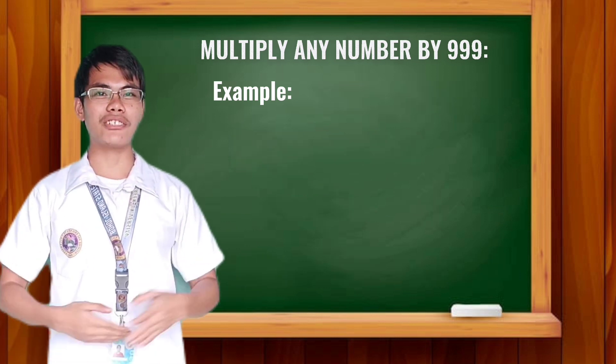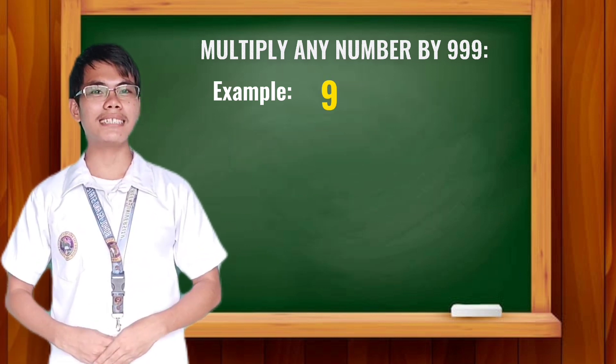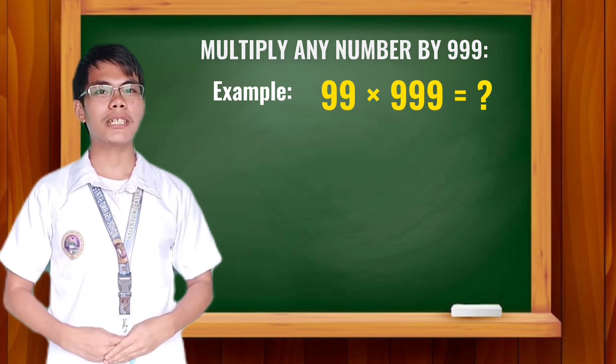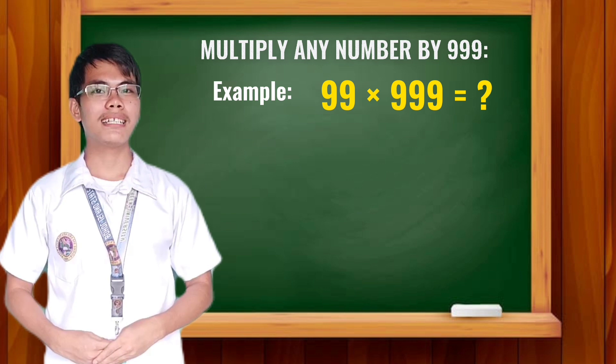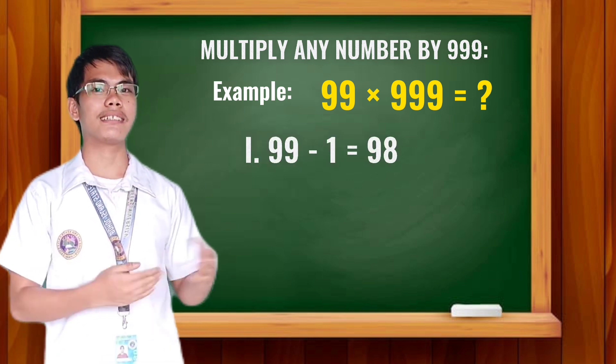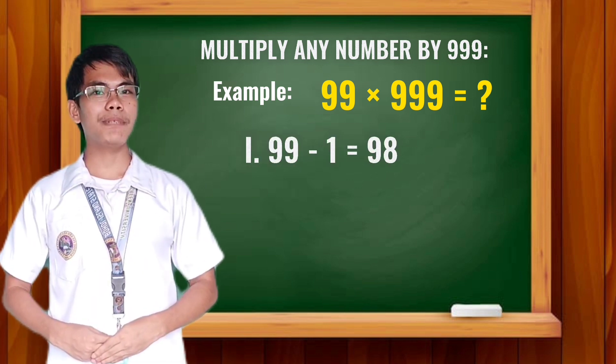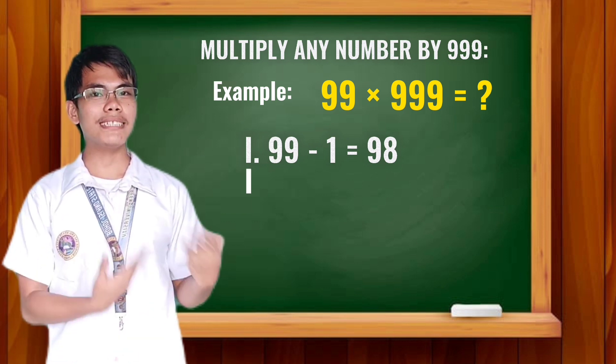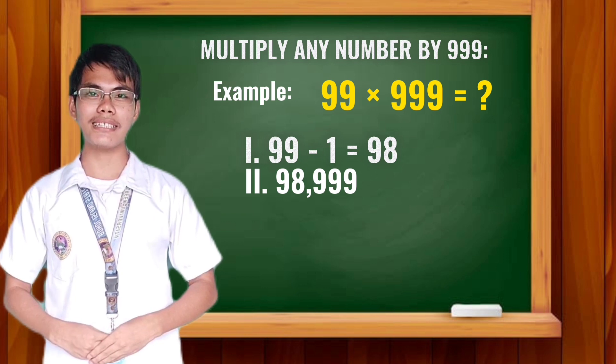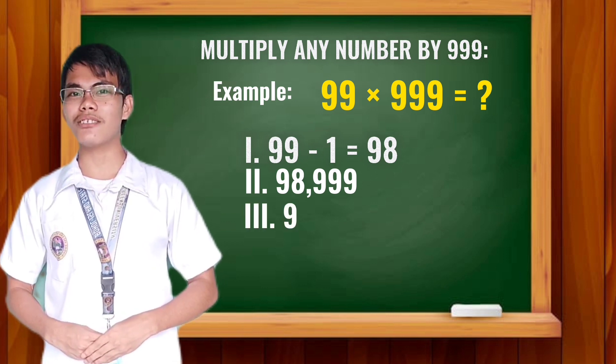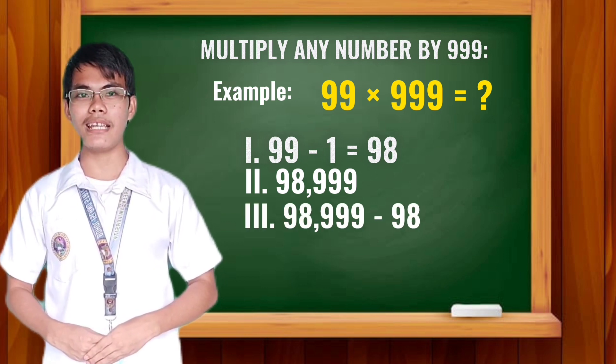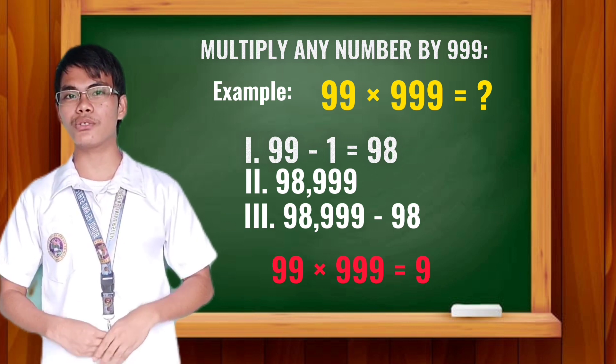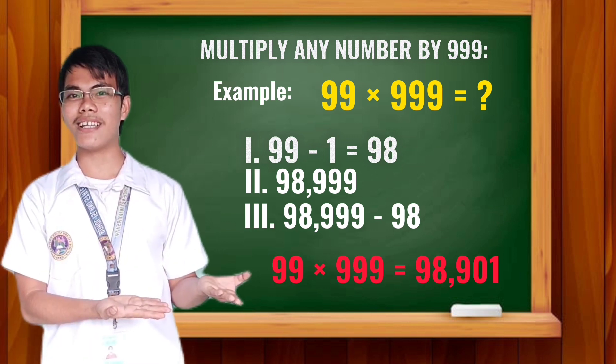Let's have another example. 99 times 999. First step: Subtract 99 by 1. 99 minus 1 is equal to 98. Next step: Copy 98 together with 999. It will be 98,999. Then, subtract 98,999 by 98. Therefore, 99 times 999 is equal to 98,901.